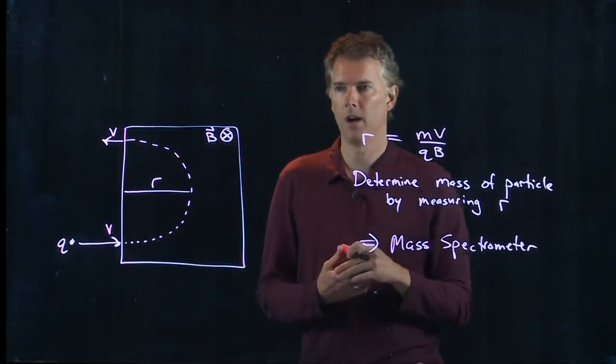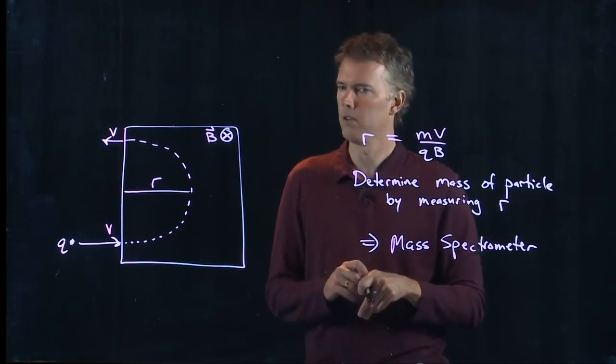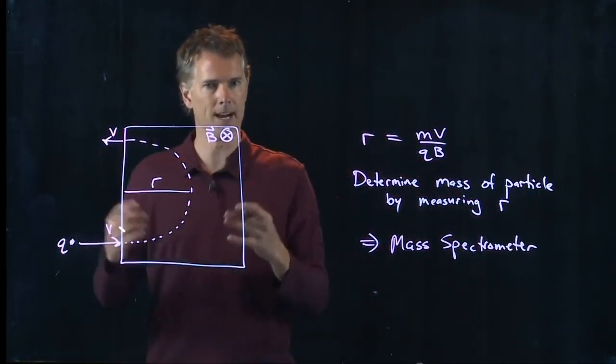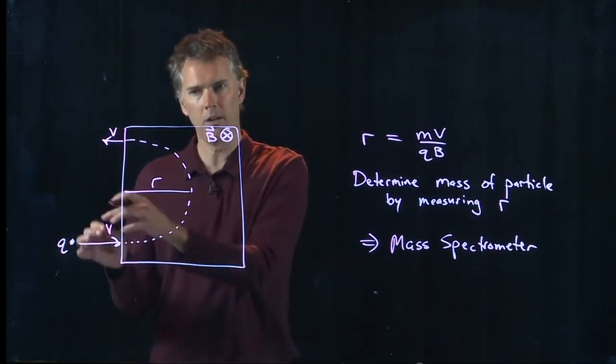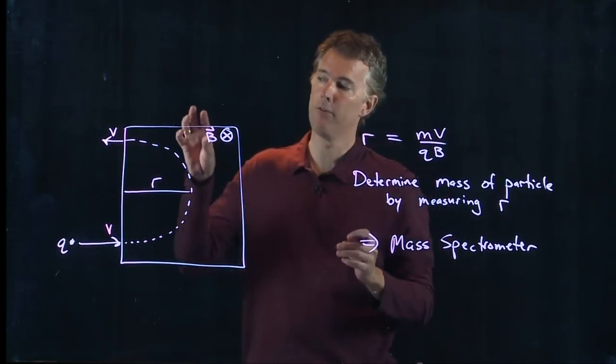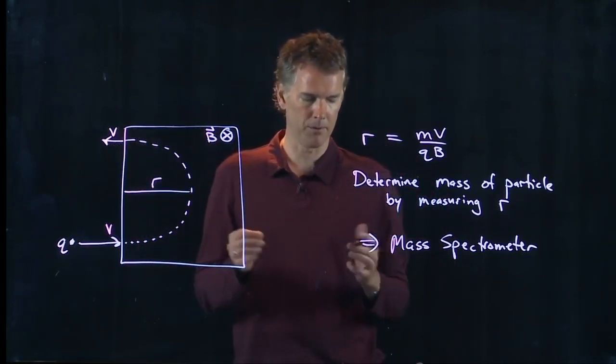We have one over in the College of Sciences. It's a million dollar machine, very big, takes up an entire room, shoots particles in, measures this curvature in the magnetic field and therefore can tell you the mass of that particle.